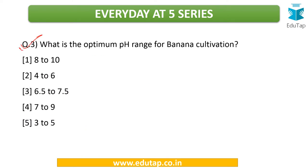Moving on to the third MCQ: what is the optimum pH range for banana cultivation? The answer is 6.5 to 7.5. If you look at the trend, this is roughly the pH range suitable for most crops — neither too acidic nor too alkaline. So there is a balance required. These are short tricks you can use to eliminate answers: do not go for extreme answers; midway answers are usually going to be correct.